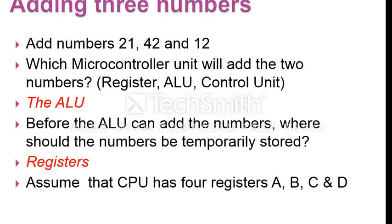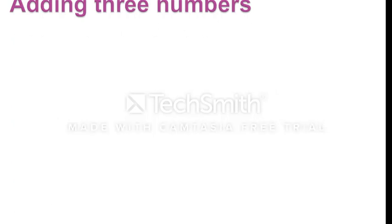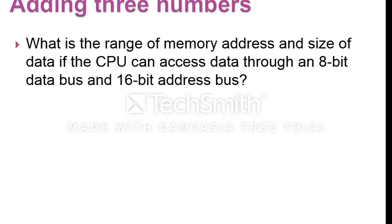Assume the CPU has four registers A, B, C, and D. What is the range of memory address and size of data if the CPU can access data through an 8-bit data bus and a 16-bit address bus?